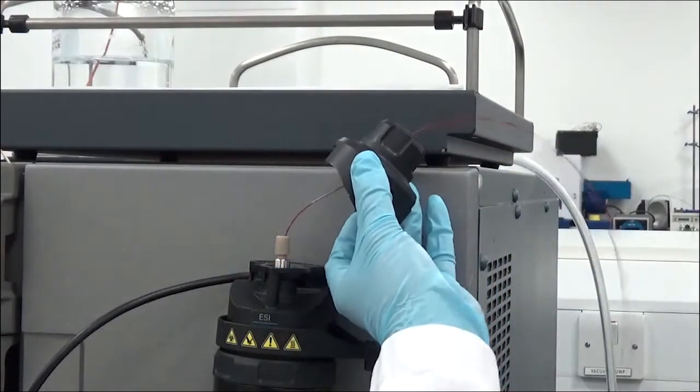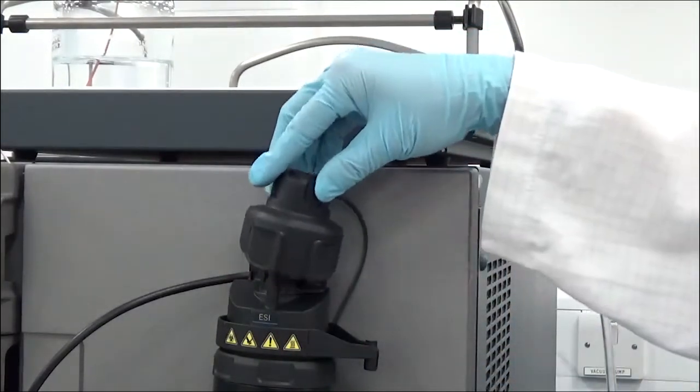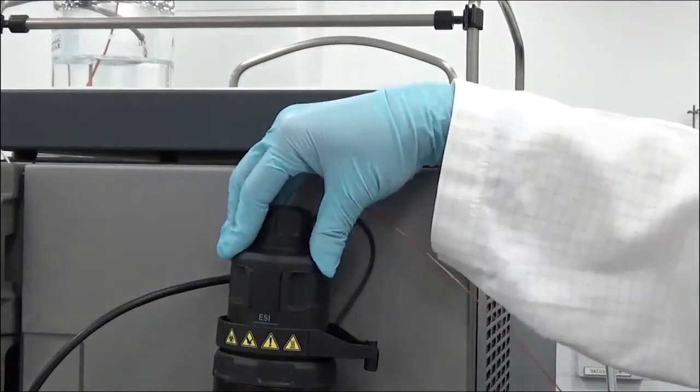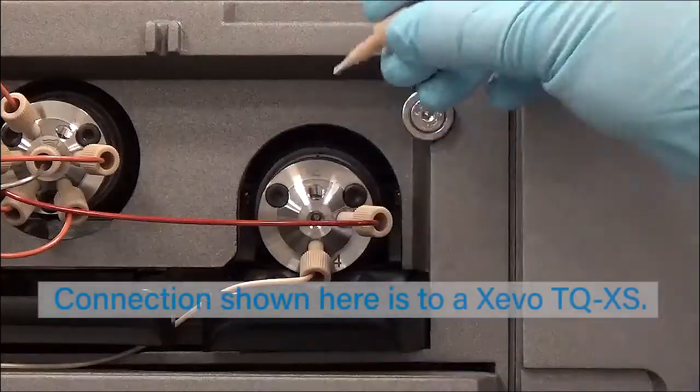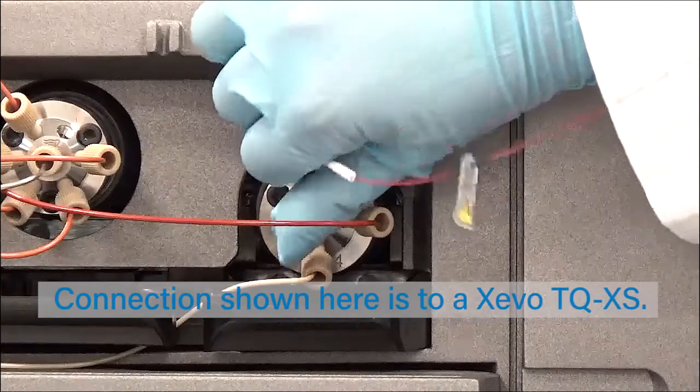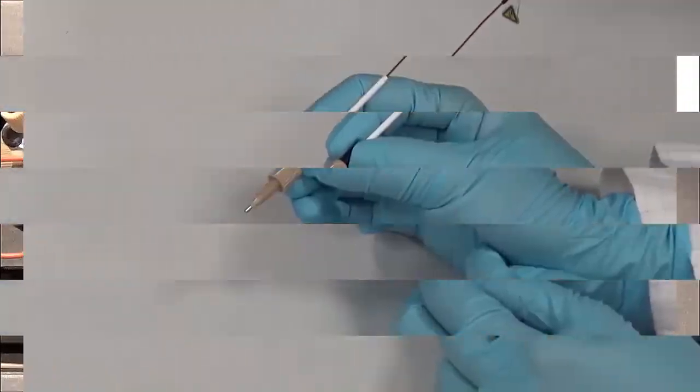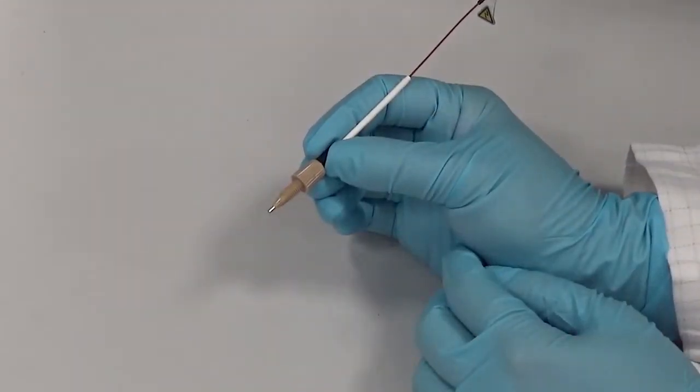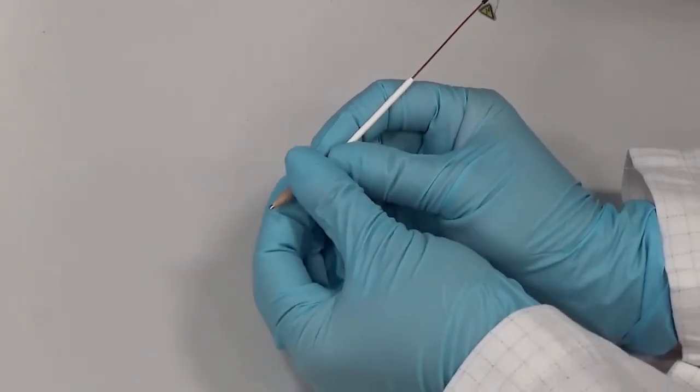Route the probe assembly through the cap and then push the cap onto the probe adapter until it clicks. Connect the inlet fitting to the appropriate port of your inlet system. The fitting can be removed if required for narrow channels or feed-through holes.